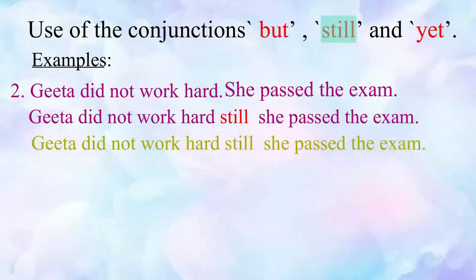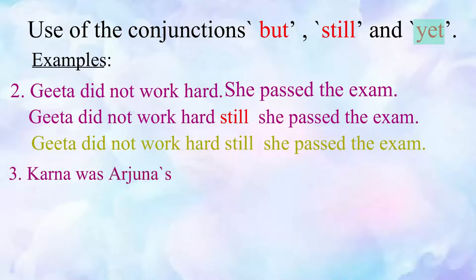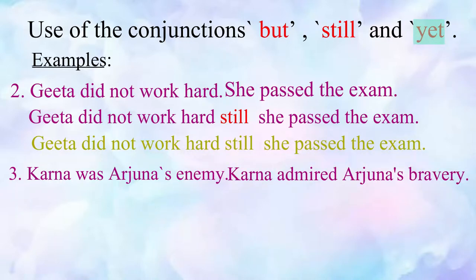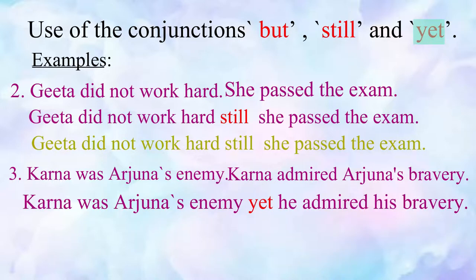In the same way, the conjunction 'yet' is used to join the next two sentences. The sentences are: 'Karan was Arjun's enemy' and 'Karan admired Arjun's bravery'. Please repeat this sentence after me: Karan was Arjun's enemy, yet he admired his bravery.